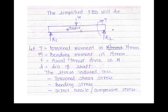When a shaft carries a load, three different stresses are developed. The self weight W creates a bending moment, and using M/I = σ/y = E/ρ, we get the bending stress σ = My/I. The torque creates torsional shear stress. As discussed earlier, normal stress is classified into tensile, compressive, and bending, while shear stress includes torsional shear and direct shear.